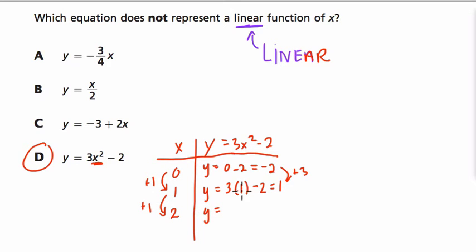If we plug in 2 for x, we have 3 times 4 now. 2 squared is 4 minus 2, and 12 minus 2 is 10. So notice here that it goes up by 9.